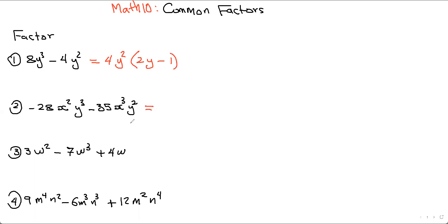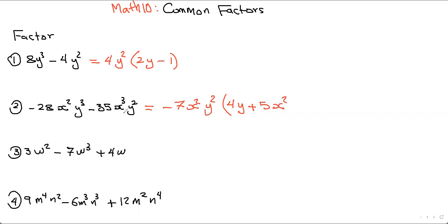For the second example, I always recommend that if you have a negative in the front, factor it out — take out the GCF and the negative as well. For 28 and 35, the greatest factor that goes into both is 7. Take the variable with the lowest exponent for x and y squared for y. Negative divided by negative is positive, so 28 divided by 7 is 4, x² divided by x² cancels, y³ divided by y² is y, then plus 35 divided by 7 is 5, x³ divided by x² is x, and y² divided by y² cancels.